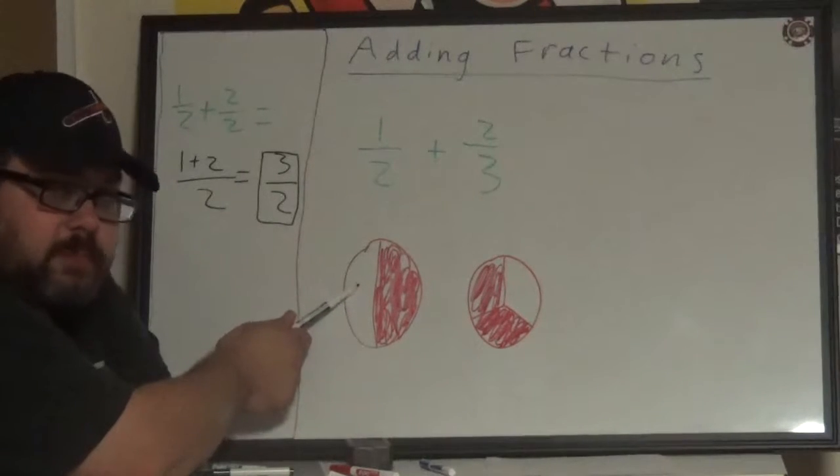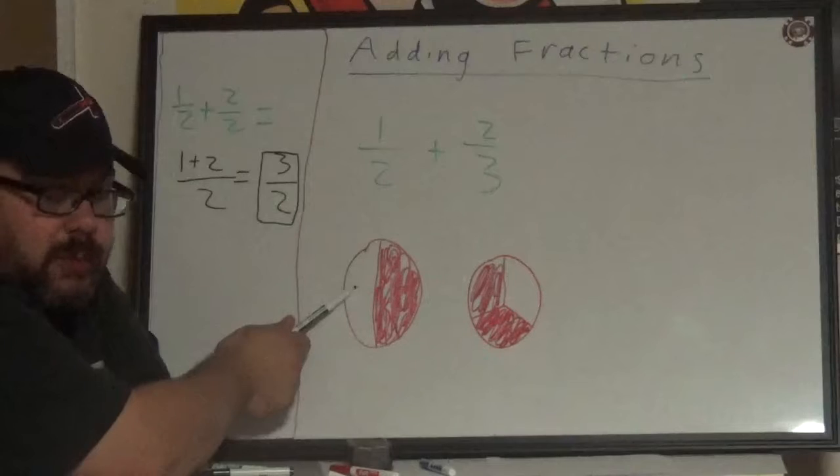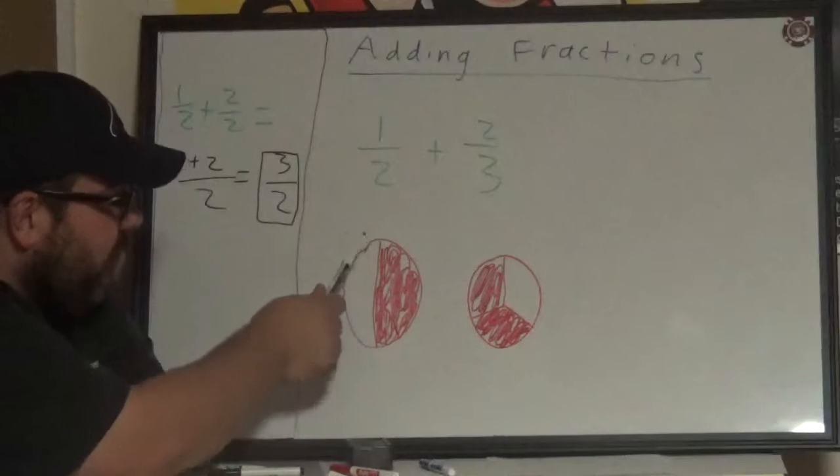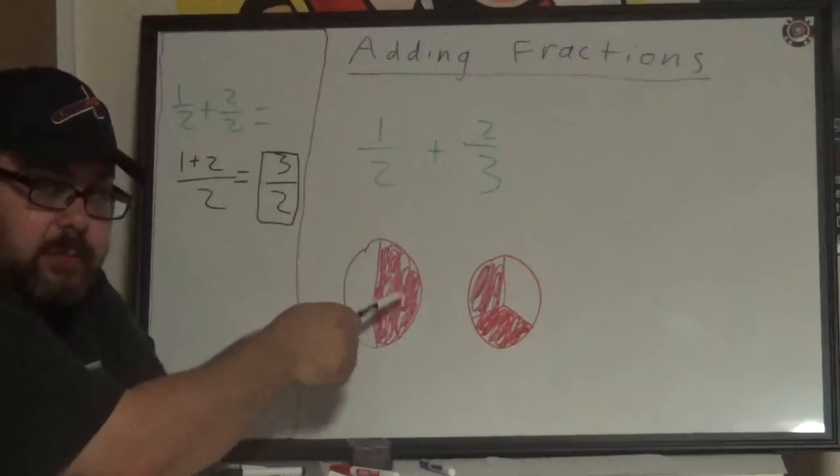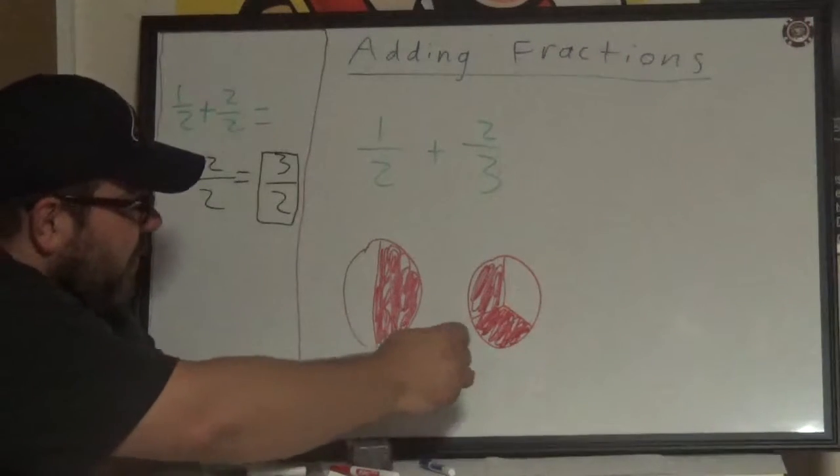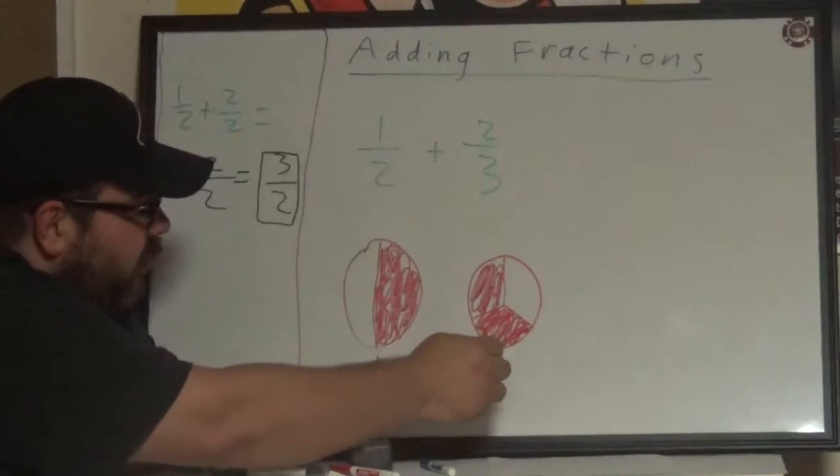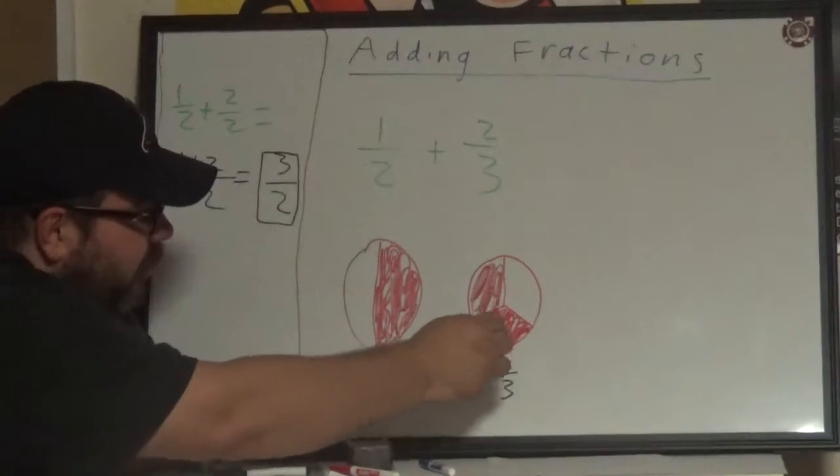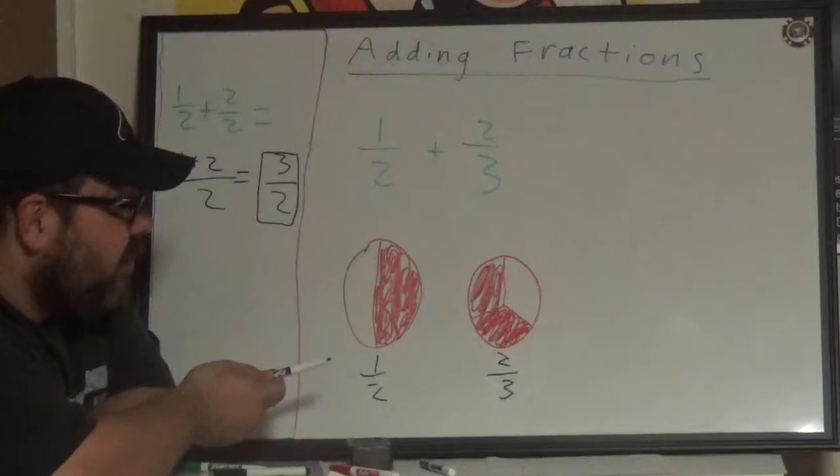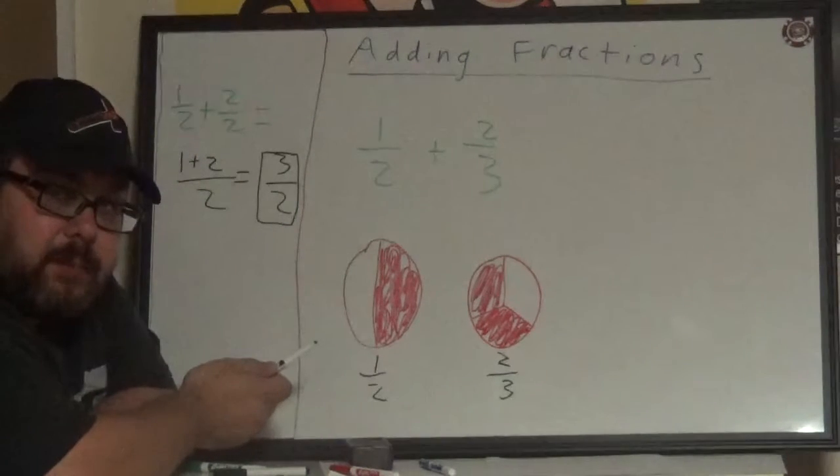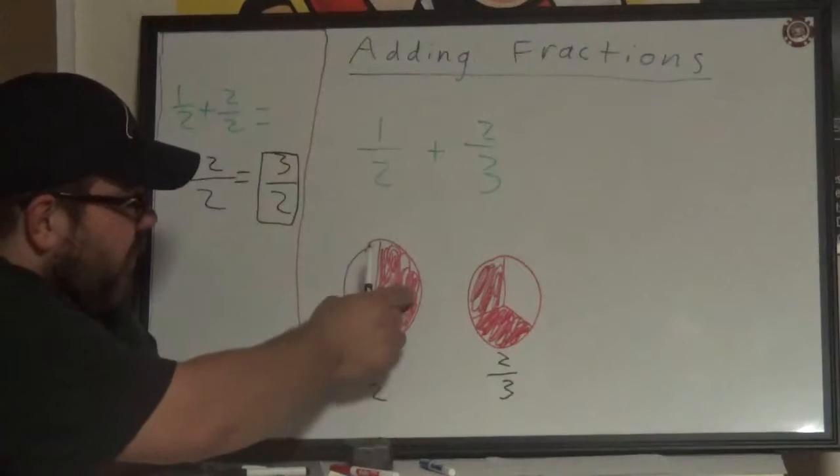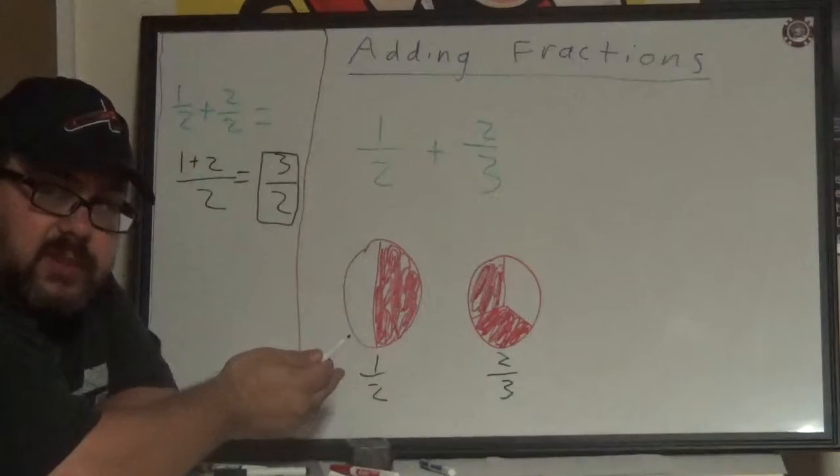So I put this example, excuse my rough drawing here, but here's one half. We have two parts, that's the denominator, and one shaded part, that's the numerator. This is one half, and this, we have three total parts and two shaded parts, which makes two thirds. As you can see, the parts that are being compared are different sizes. That's why we need a common denominator, so that we are adding and comparing the same sizes.